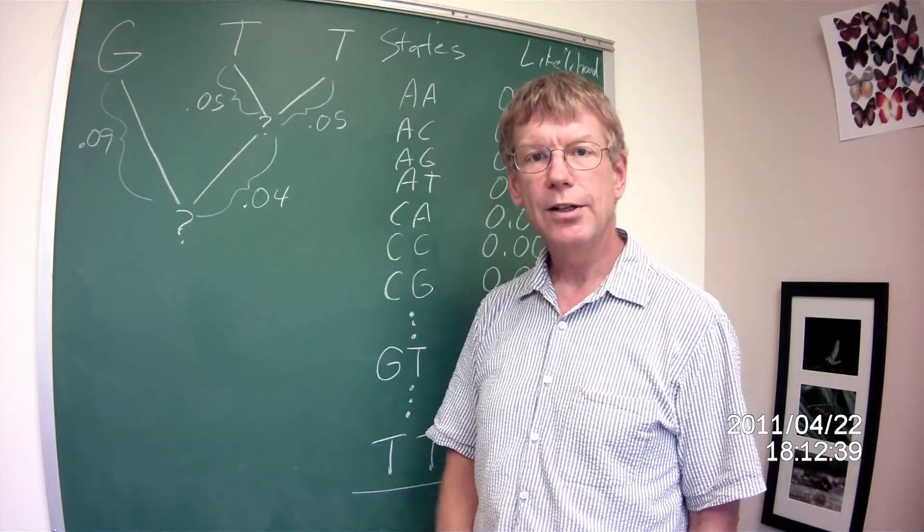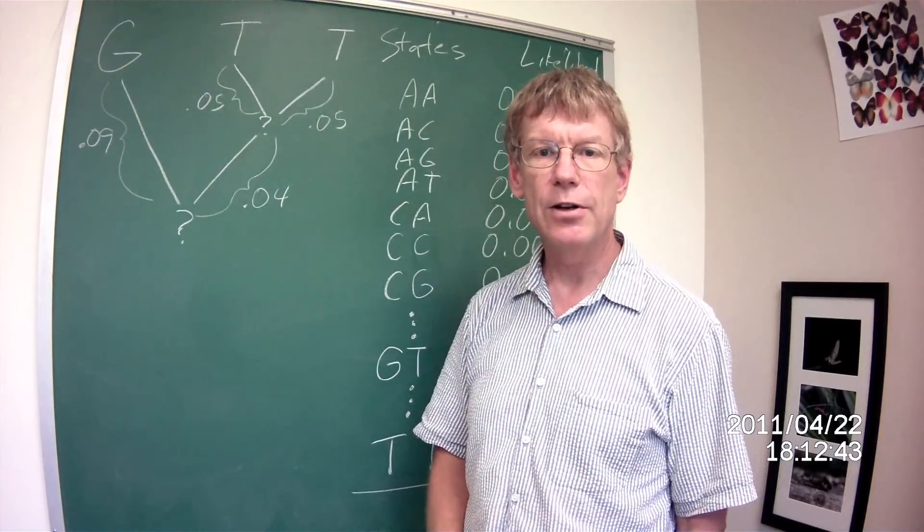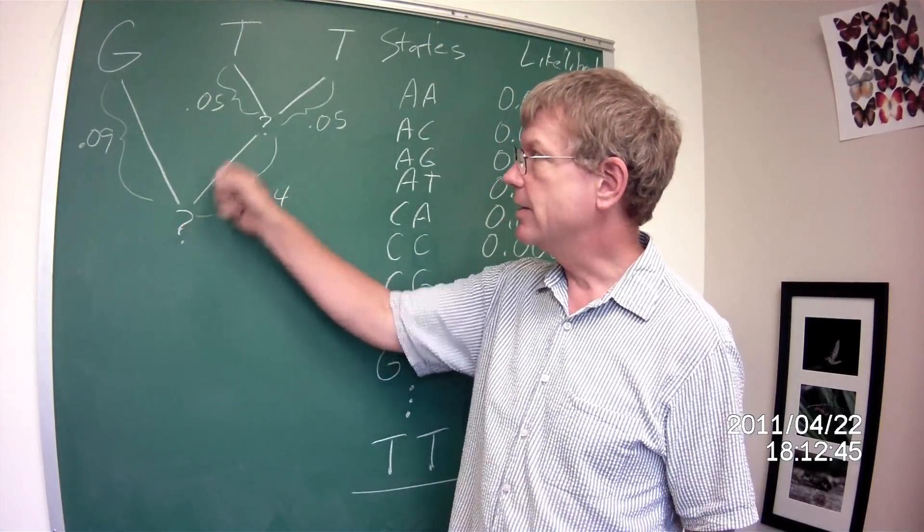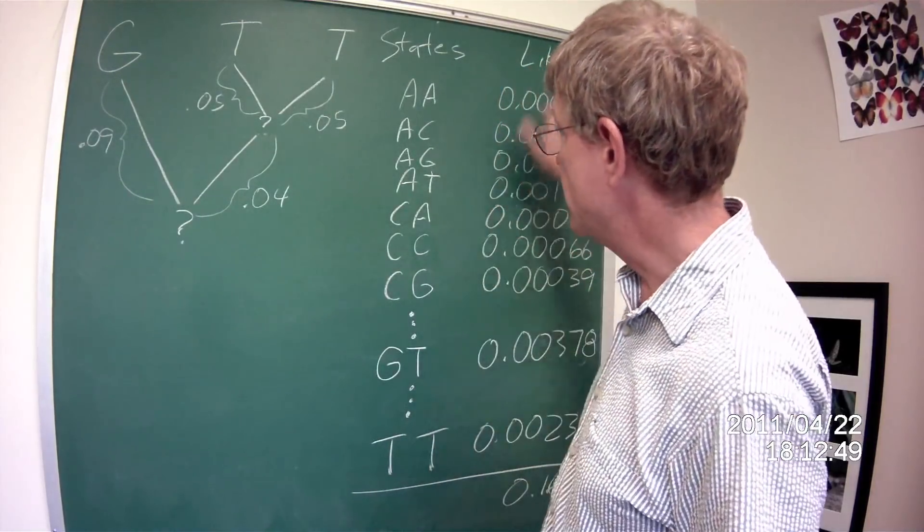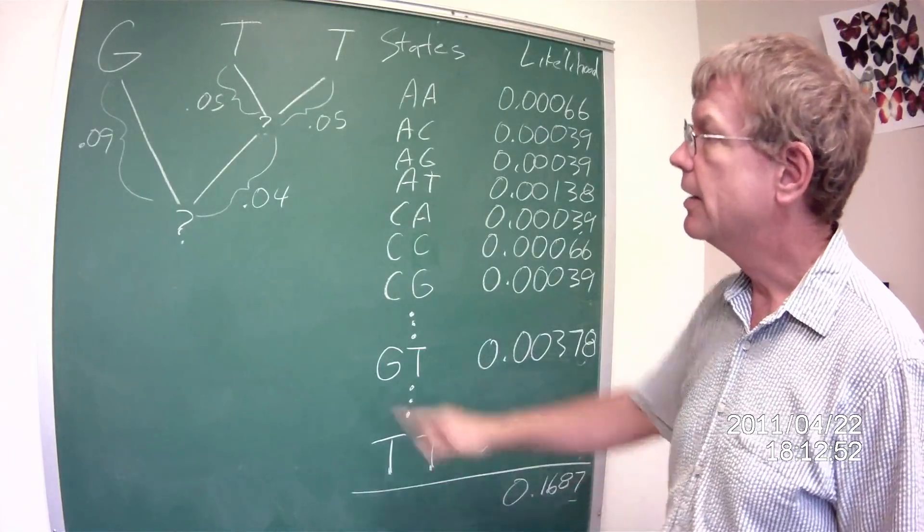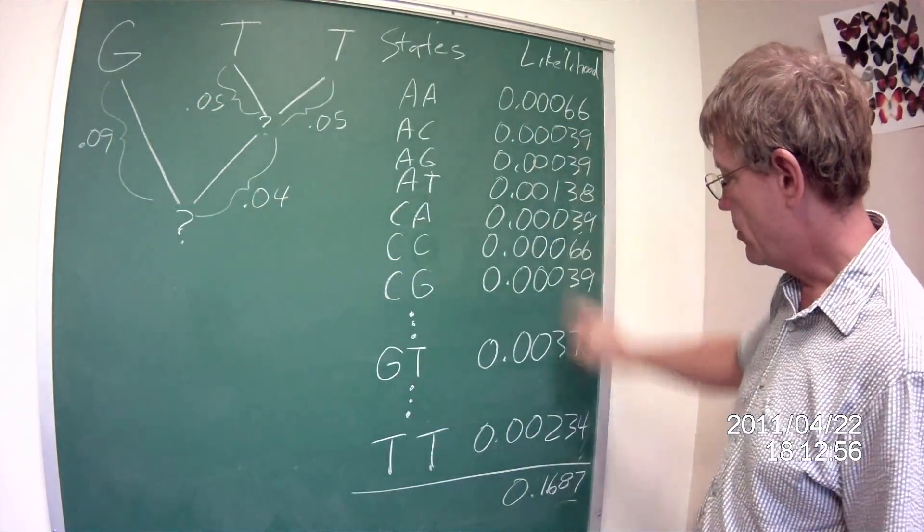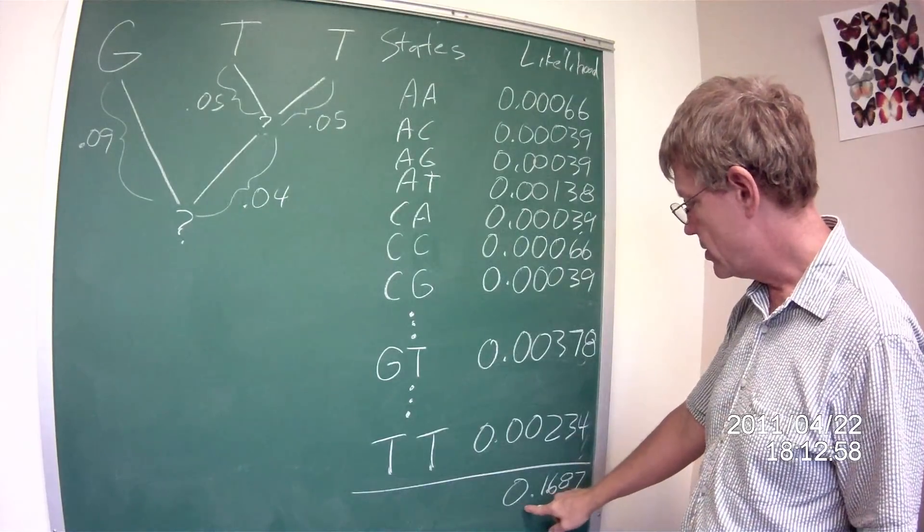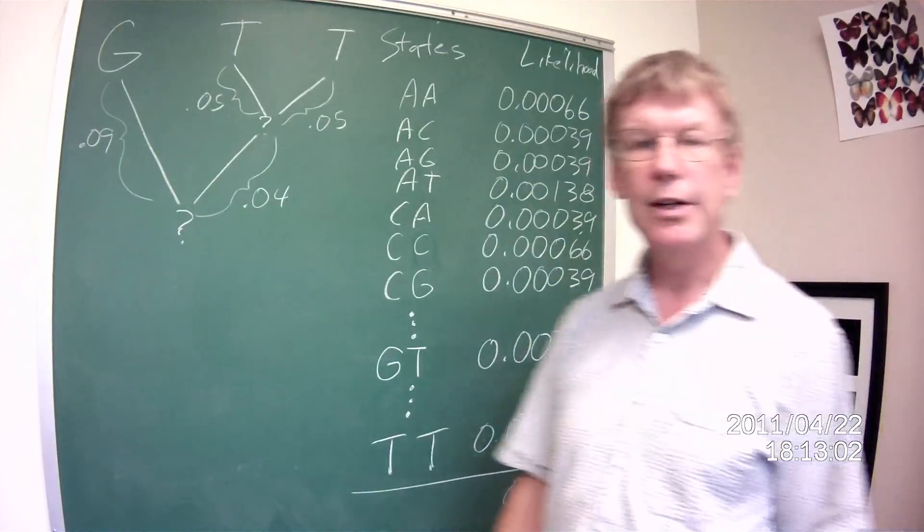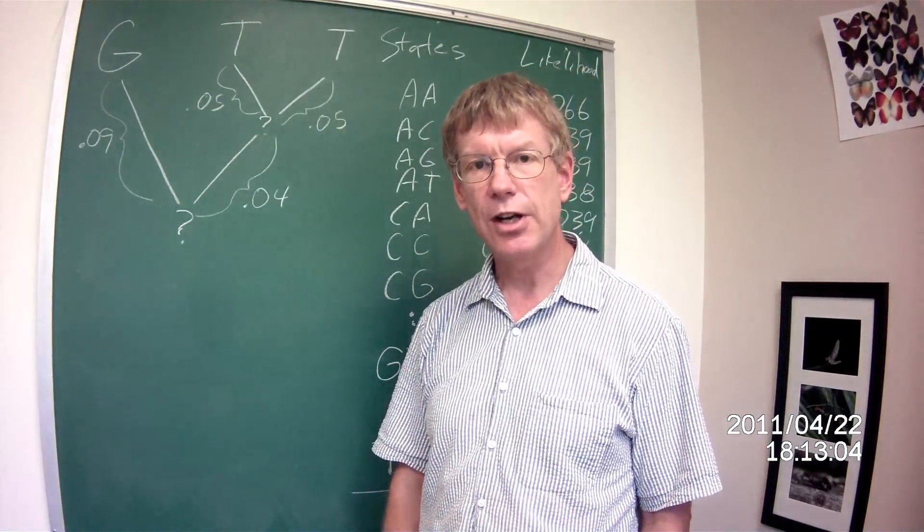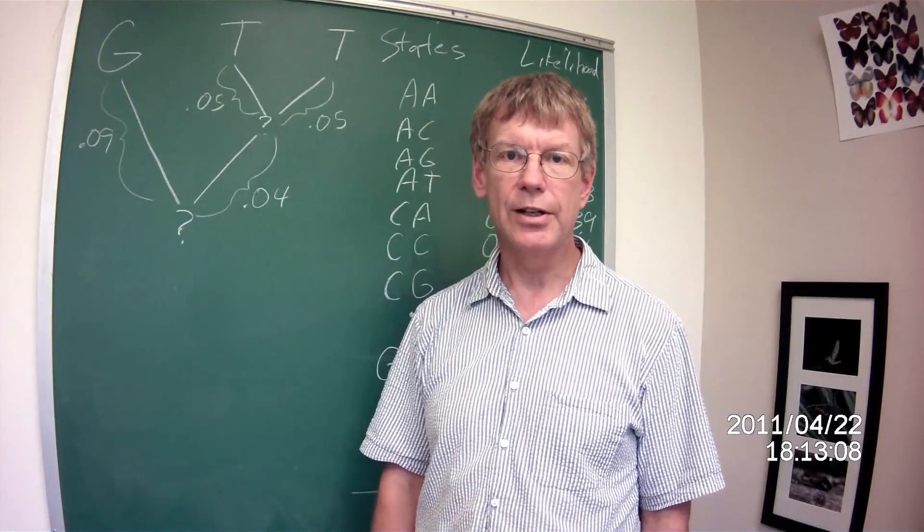So, what likelihood is doing is calculating the probability of every possible state at the missing internodes and summing them into a combined probability of this tree with this branch length. You add them all together and you get 0.1687. Then we're going to take the likelihoods at each site and multiply them together. This is how we calculate a likelihood score.